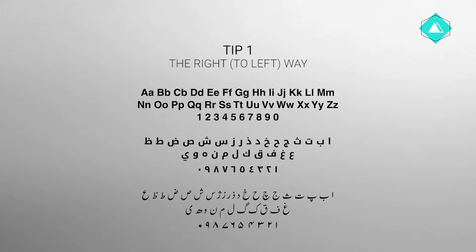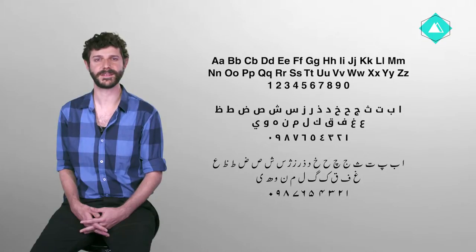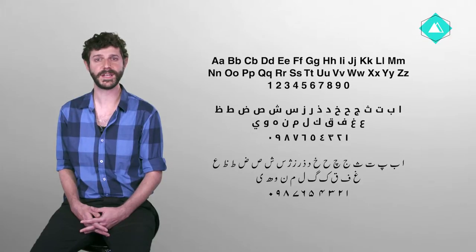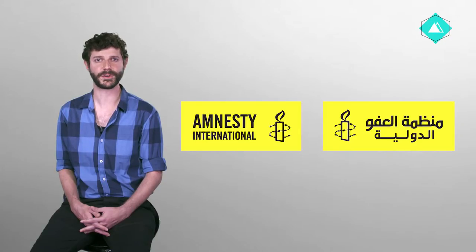Working with more than one language can be challenging, especially when we work with Arabic or Farsi. Not only are we dealing with a different alphabet, but also the reading and writing direction changes from left-to-right to the other way around. So it is really important to be aware of the changes that we need to make to accommodate that switch. Let's have a look at Amnesty International's logo. In countries that read left-to-right, the candle is on the right, but in the Arabic version of their logo, the candle is on the left — the Arabic version simply mirrors the original.